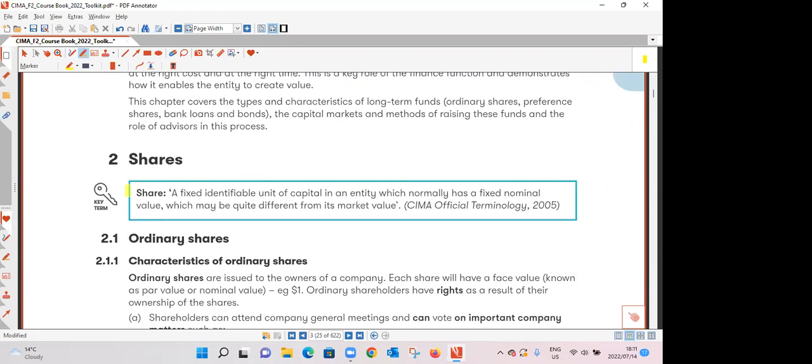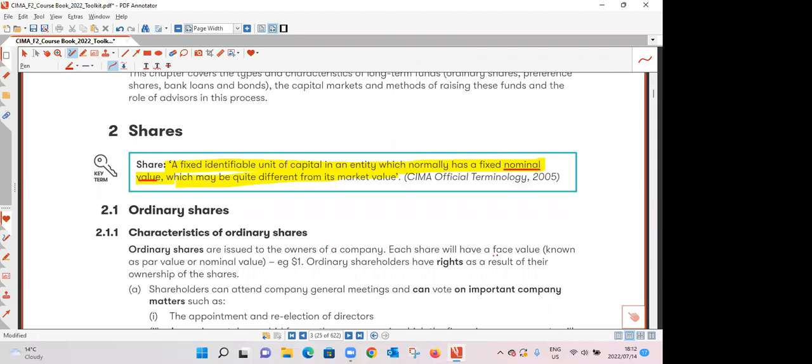So let's take a look at shares. According to CIMA a share is a fixed identifiable unit of capital in an entity which normally has a fixed nominal value which may be quite different from its market value. It's imperative that we take note that this definition applies to both ordinary shares and preference shares and when you see the words nominal value it is exactly the same as face value and also par value so the three can be used interchangeably.